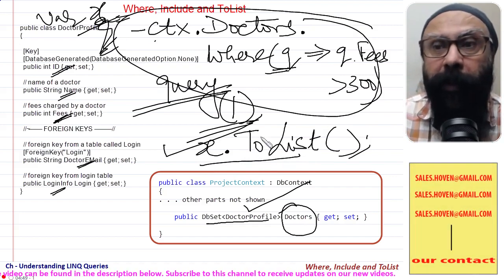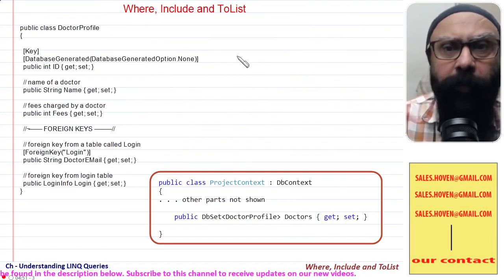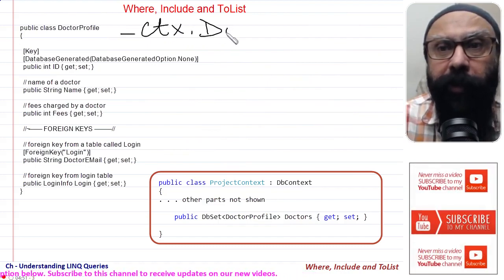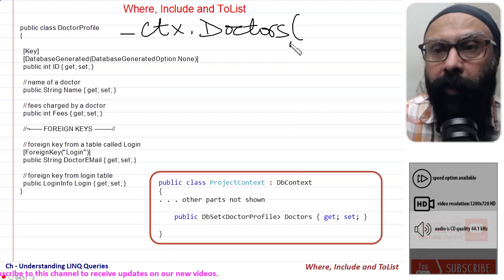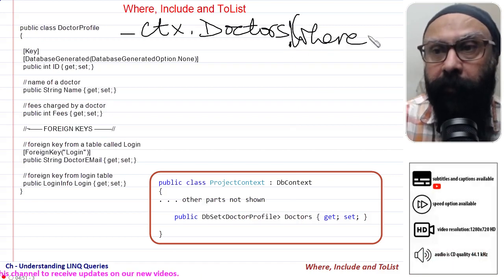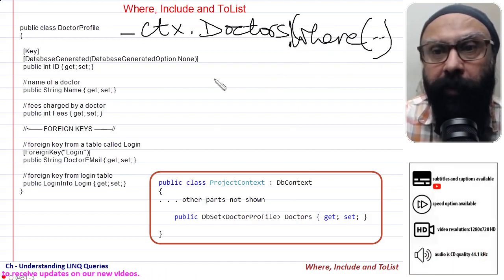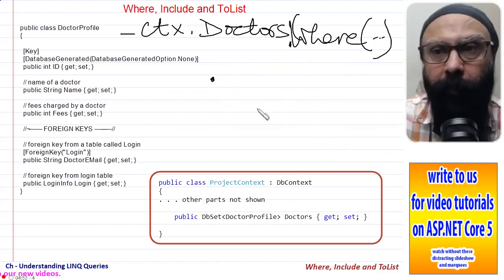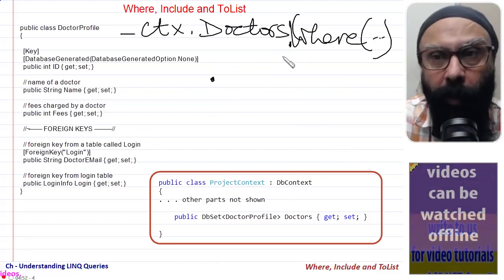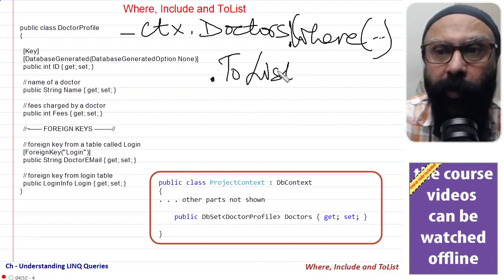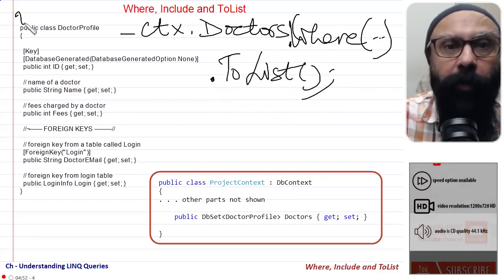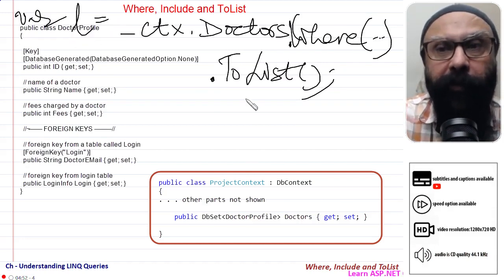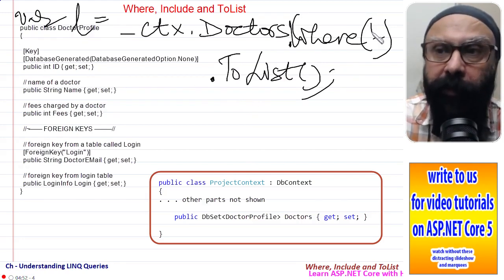Another thing, sometimes we can chain it also. You must already have seen that we chain it many times: underscore ctx dot Doctors dot Where that condition, then put another dot along the same statement to write it as dot ToList. And now if I write where_l is equal to, then l is the entire list that meets this criterion.